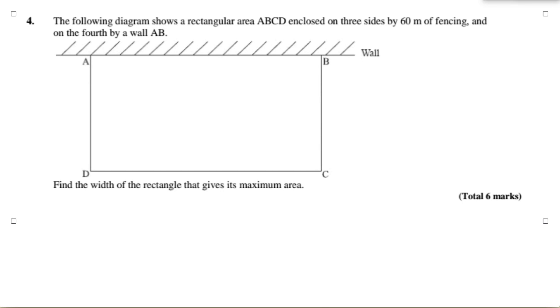Hey guys, so today we're going to be doing question number four. The following diagram shows a rectangular area enclosed on three sides by 60 meters of fencing and on the fourth by a wall AB. Find the width of the rectangle that gives its maximum area. So you know that the perimeter...